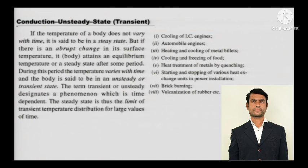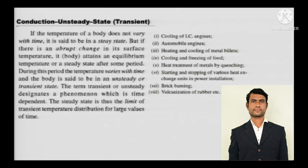The transient state is basically an unsteady state. For example, in quenching of a metal: you heat it in an oven at around 1100-1200°C, then take it out and dip it in a cold oil or water bath. It undergoes crystallization, becomes very hard and brittle. This abrupt temperature change over the duration of time is called transient heat transfer.